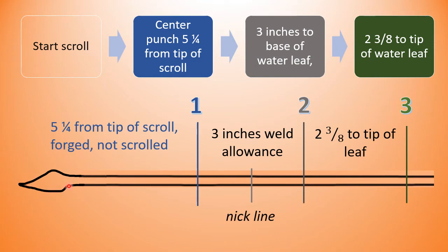Set your center punch marks in place for the end of that scroll, the welding allowance, and the parent stock allowance for your water leaf. With the center punch marks in place, blow back the tip of the leaf and bend to 90 degrees.